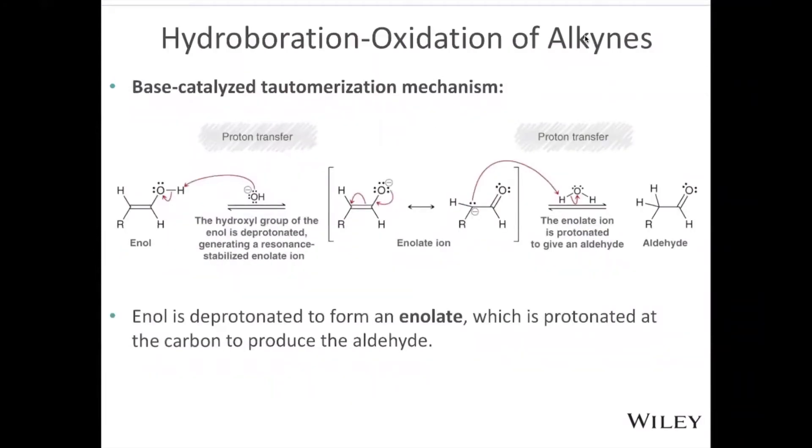Base catalyzed tautomerization, it's the same reaction, but this time we're using a base. So here's our enol. And the first step, we're going to have the base pull off the proton, creating this negatively charged oxygen, which then has resonance structures, that negative charge on the oxygen can be shared with this carbon right here. And so in that case, the nucleophilic anion here of the carbon reaches out and gets protonated with the conjugate acid of our base, giving us the aldehyde or ketone.